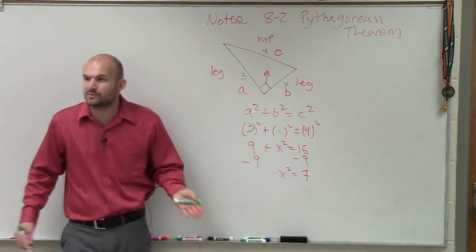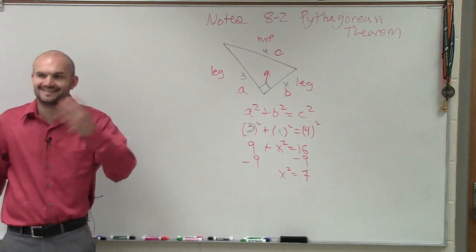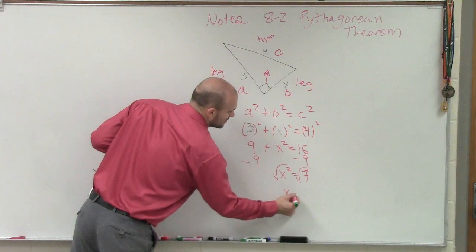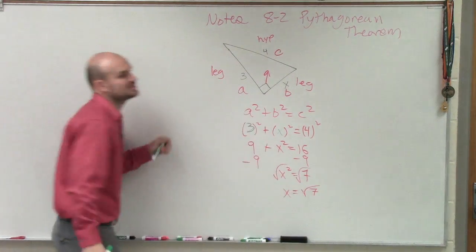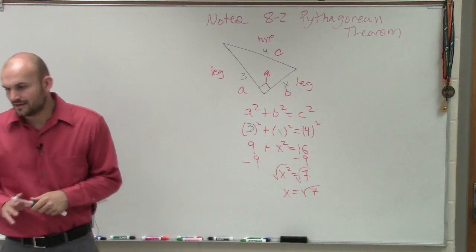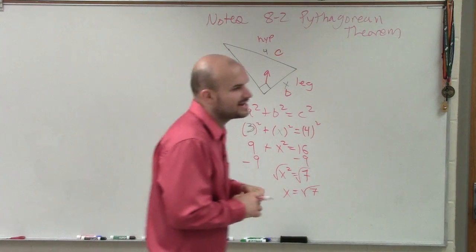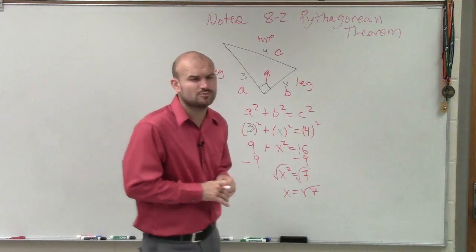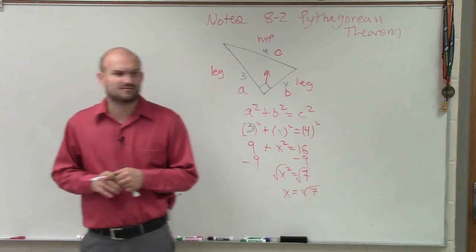And now, to undo the square root to square, I have to take the square root. And since that's going to introduce an irrational number, I'm just going to leave it at that. You guys don't need to do the decimal format for me. For right now, we're just going to leave it there.